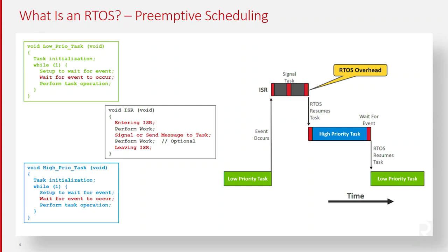It runs the highest priority task that's ready to run. Upon completion of the high-priority task, the high-priority task says, let me wait for that event to occur again. If the event did not occur again, then the RTOS decides you can't do anything — your event has not occurred a second time. So it goes back to the interrupted task and continues execution as if nothing happened.